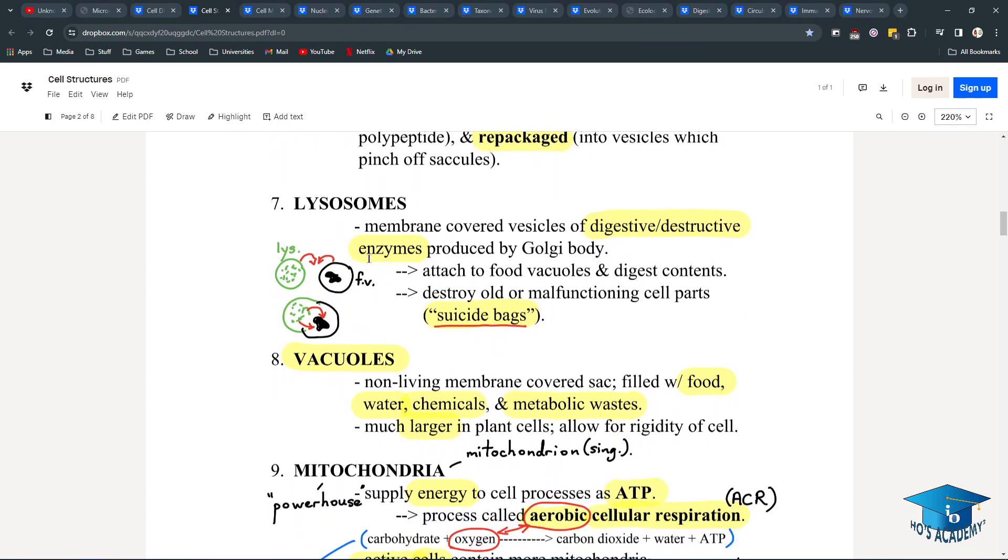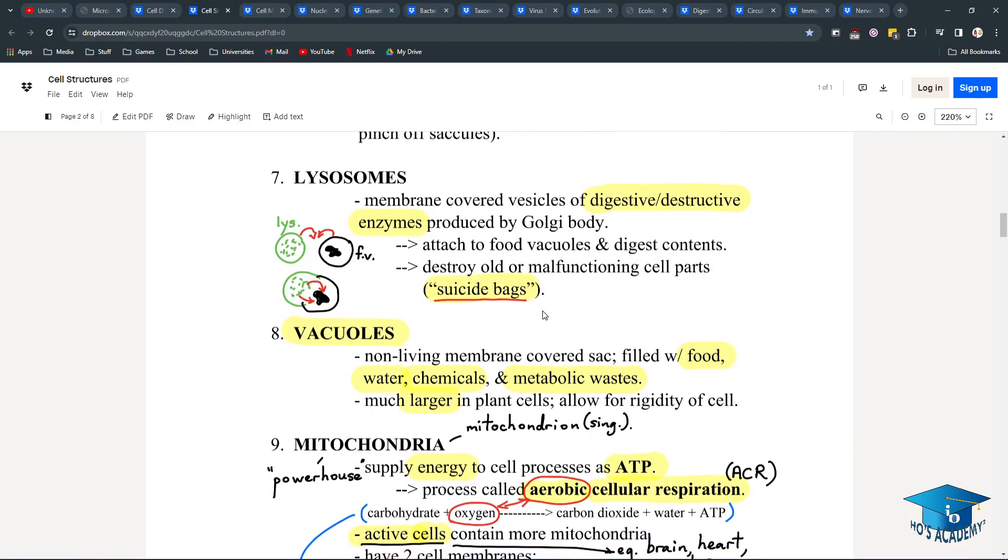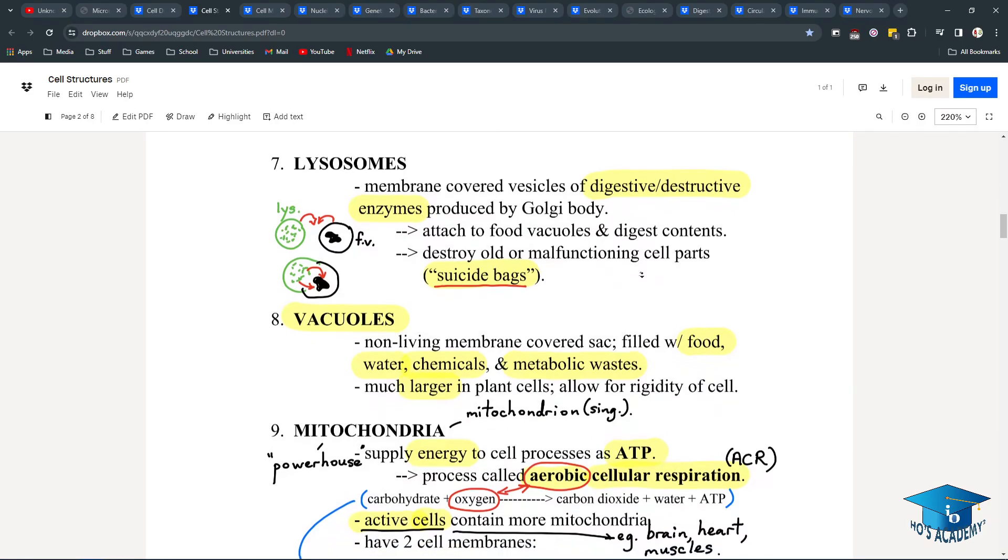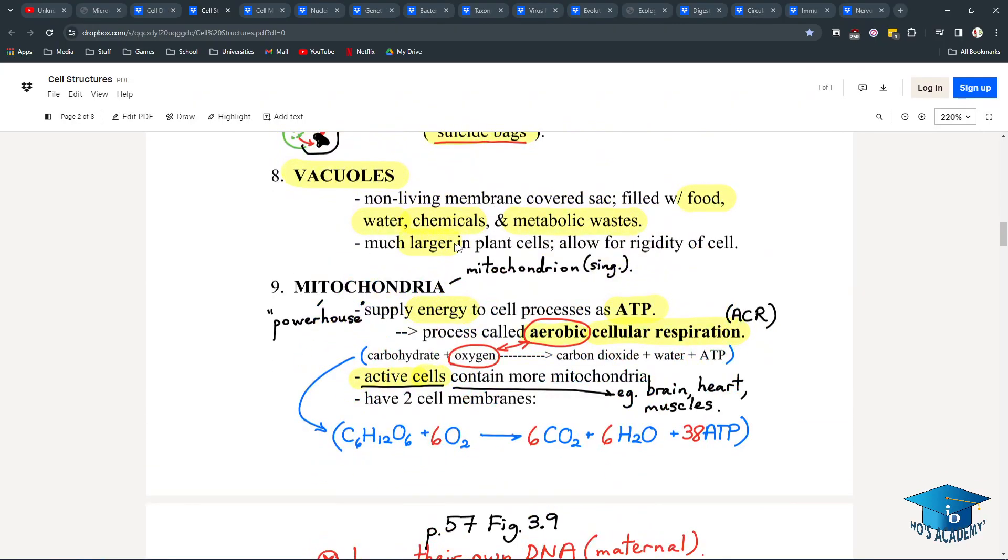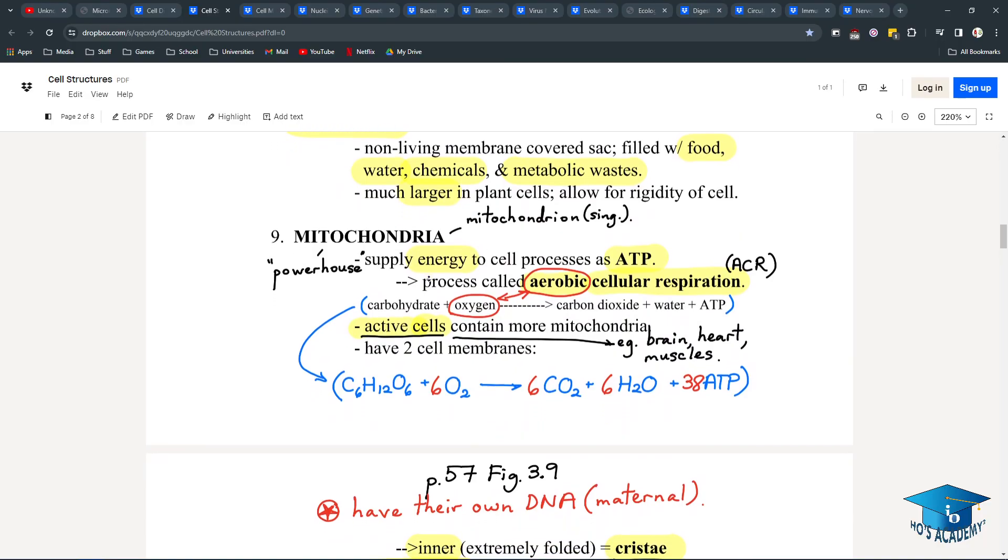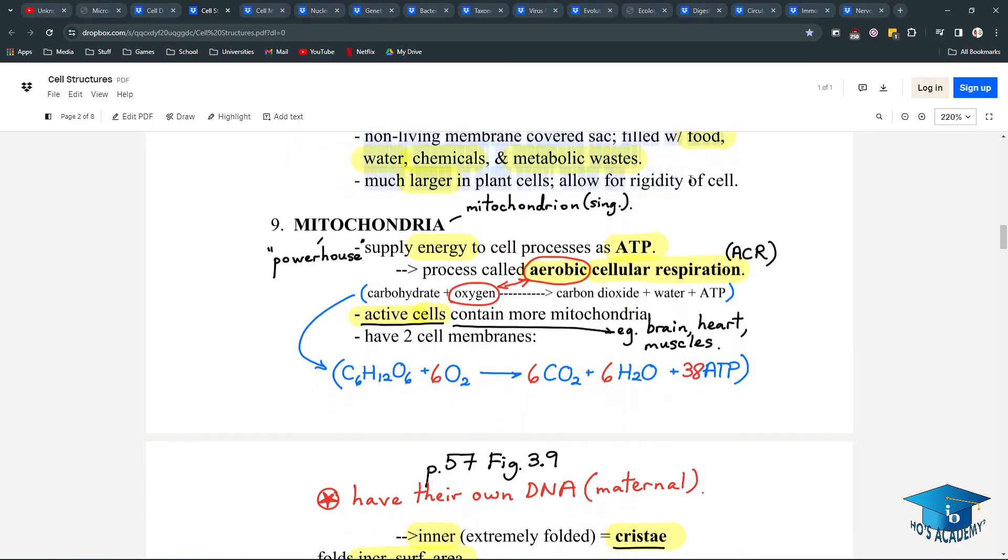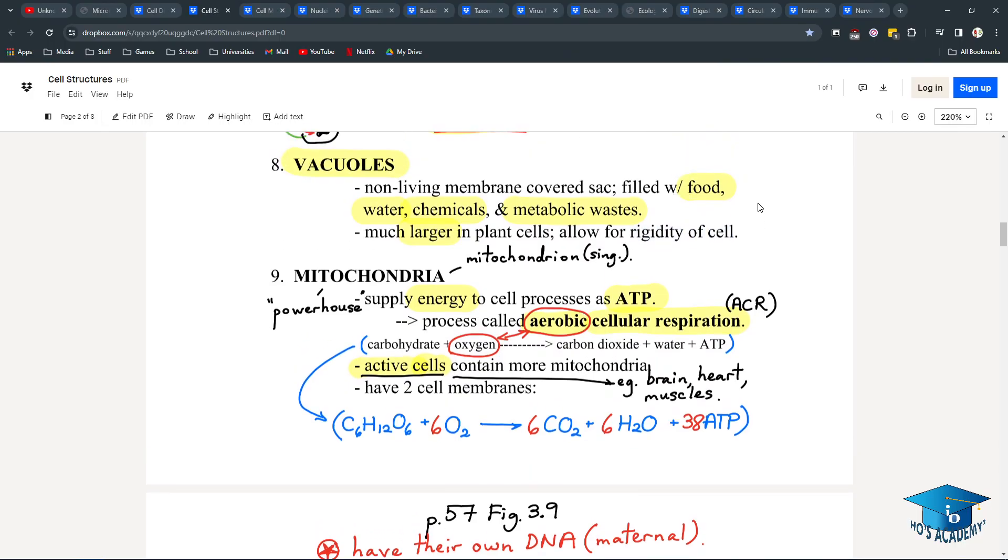Lysosomes, or suicide bags, are used to digest things. So it combines with a food vacuole, they merge, and then their enzymes within will digest the parts, and they'll be free-floating in your cell for use. Vacuoles are just sacks, little bubbles used to hold things. In the plant cell, they're the large central vacuole for water, which allows for rigidity of the cell. If you think about a tree or plant, they don't wade in water, they don't bend very easily.